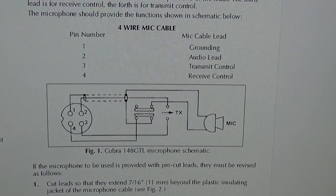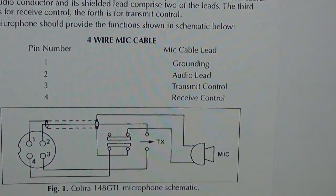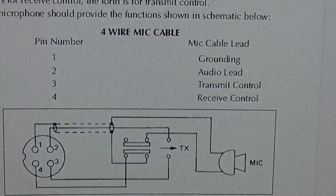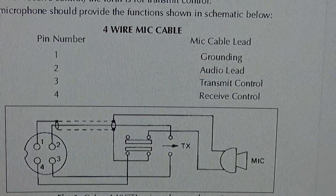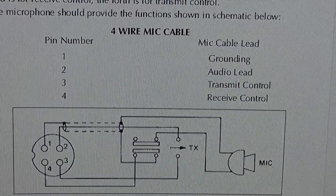So as you can see here in the owner's manual for the Cobra 148, it actually gives you the wiring order for microphones. So you see pin 1 needs to be the ground, pin 2, audio lead, pin 3, transmit control, and pin 4 is receive control.